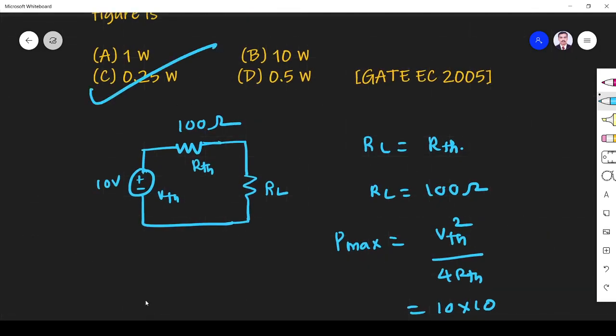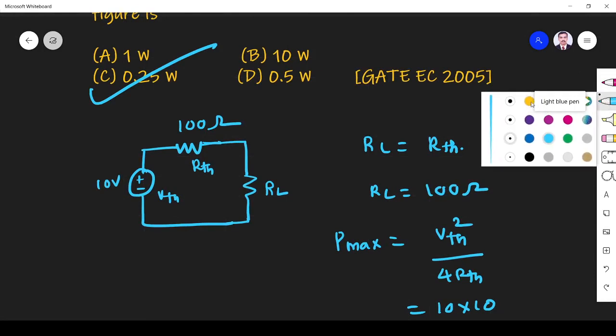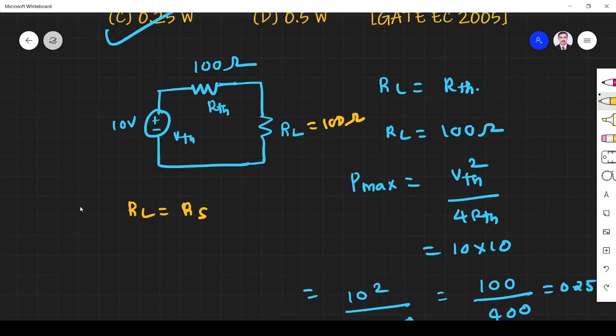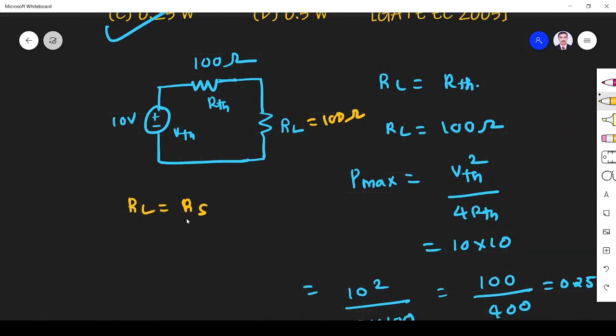Otherwise we can solve it in a different way also. Here you see it is 100 ohm. We know for maximum power transfer, load resistance must be equal to source resistance. So RL is equal to Rs, which is 100 ohm. This 10 volt is divided between these two, so 5 volt here and 5 volt here.